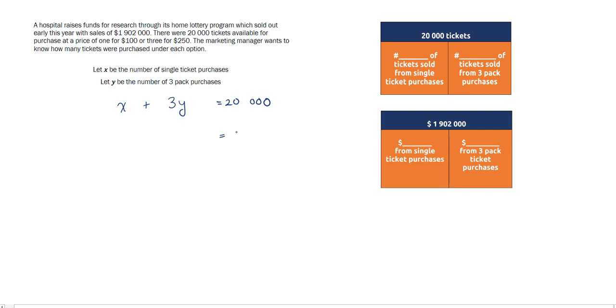We'll also have to generate an equation for the amount of money in sales. The total amount of sales was $1,902,000, and that was obtained by $100 for every single ticket purchase, so 100 times x, and $250 for every three-pack purchase, so 250 times y. Now what we have is a system of linear equations.